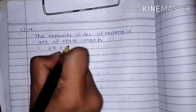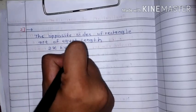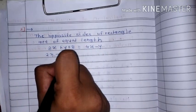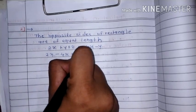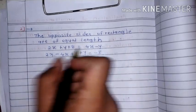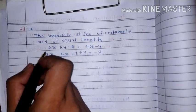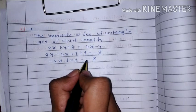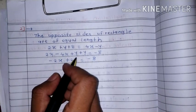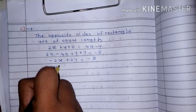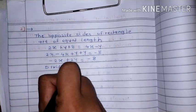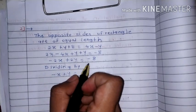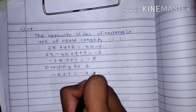Since opposite sides of a rectangle are equal: x plus y plus 8 is equal to 2x minus 4. Rearranging gives minus x plus 2y is equal to minus 8, divided by 2, giving minus x plus y is equal to minus 4. This is equation number 1.